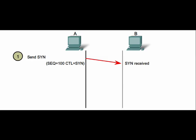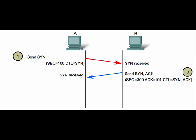First, the initiating client sends a TCP segment containing an initial sequence value, which serves as a request to begin a communication session with the destination host. Next, the destination responds with a segment containing an acknowledgement value equal to the received sequence value plus one.